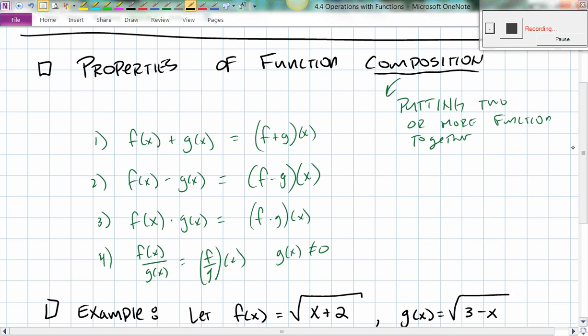So what I did was I gave you the properties of function composition. And the word composition is just basically when you put two or more functions together. So we went over properties 1, 2, 3, and 4. So we're going to add two functions, f of x plus g of x. It's just equal to f plus g of x. And these behave as you would expect them to.